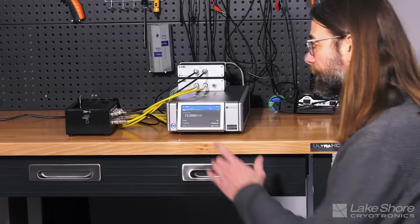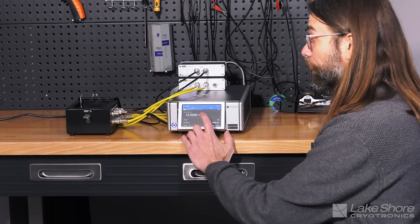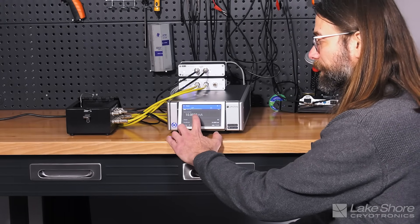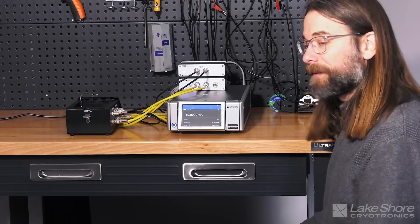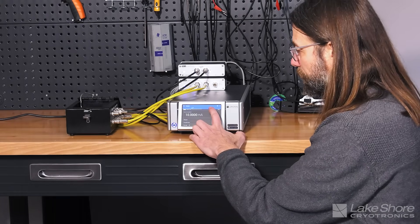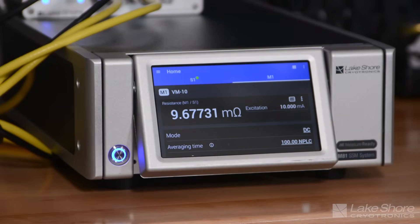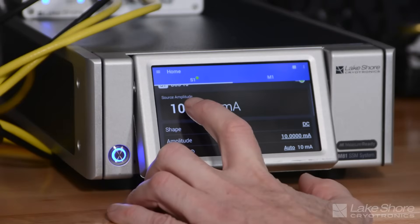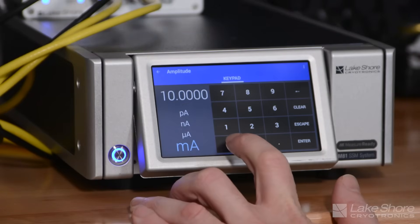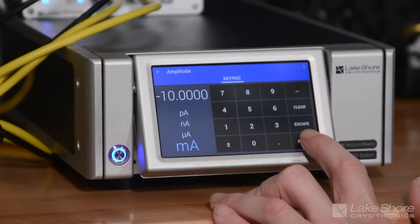So the first thing that I would like to do after we've done the setup here is take a look at sourcing 10 milliamps. So we just got 10 milliamps coming out of the current source through this resistor, and we're measuring 9.67 milliohms, which is pretty good. But I'm going to do something here. I'm just going to switch the polarities where we're sourcing a positive 10 milliamps. Let's flip it back to negative 10 milliamps.